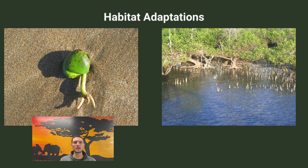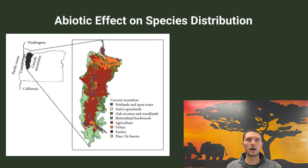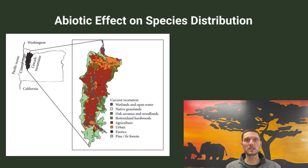These two very different environments show how different plant species have developed adaptations over time to survive. The distribution of species throughout a geographic region or the world is dependent on the particular abiotic factors present and the species' adaptations for a particular environment. Plant distribution is primarily influenced by temperature, water availability, light intensity, soil pH, soil salinity, and mineral availability — all of these influence where plant species are distributed.